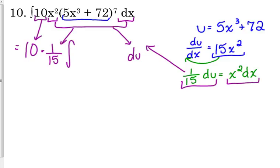So, my 5x cubed plus 72 was my u. That's to the 7th power. So what I've done is I've changed my variables, so that now I have something that I can integrate just using the power rule.